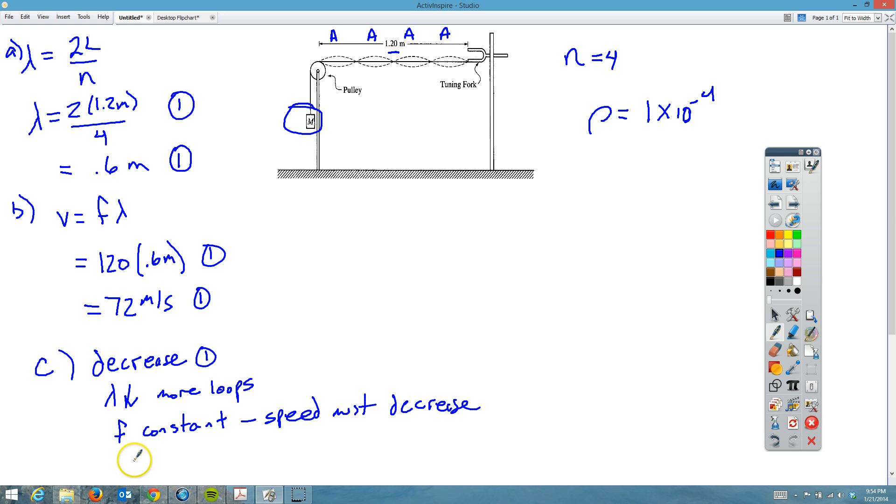And finally relating to the tension - the speed needs to decrease, and if that tension decreases, then the mass must also decrease. You just need to see any two of these statements at least, and then you'll get the other two points.